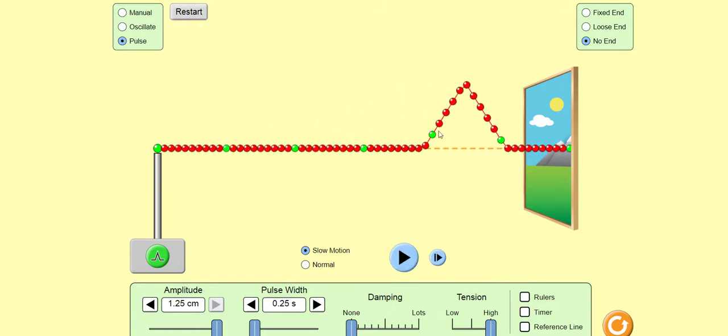Now, this region of string over here that a moment ago didn't have any energy does now possess energy, whereas the region over to the left here no longer possesses any energy. In other words, the progressive wave has transferred energy from a region to the left to another region to the right, but no matter or particles were transferred in the process. No beads, green or red, moved to the right. They only moved up and down temporarily.